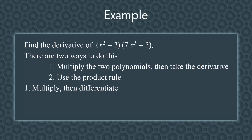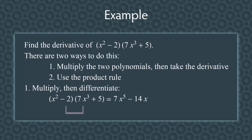Remember, when you multiply two polynomials together, you multiply each term on the left by each term on the right. (x² − 2)(7x³ + 5) gives us: x² times 7x³ is 7x⁵, negative 2 times 7x³ is −14x³, x² times 5 is 5x², and negative 2 times 5 is −10.